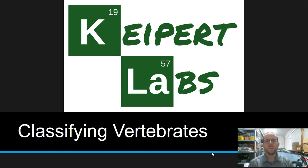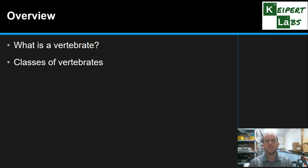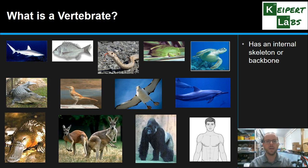Hi everyone, welcome to this episode of Kuypert Labs. In today's video we're going to look at classifying vertebrates. We're going to start off by looking at what we mean by a vertebrate and then go through the different classes of vertebrates. A vertebrate is the scientific word for an organism that has an internal skeleton or backbone. It's from the same word that we get our vertebrae from — the bones that make up our spine.